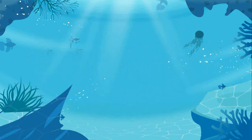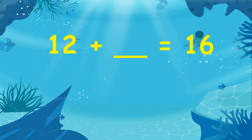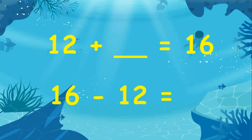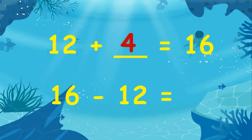Can you tell the missing number in the equation 12 plus blank equals 16? To find the missing number, you will subtract: 16 minus 12 equals 4. Therefore, the missing number is 4.